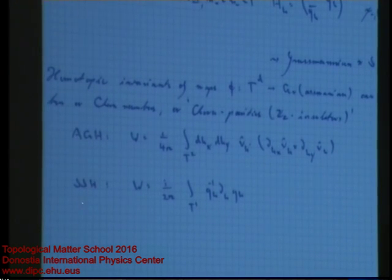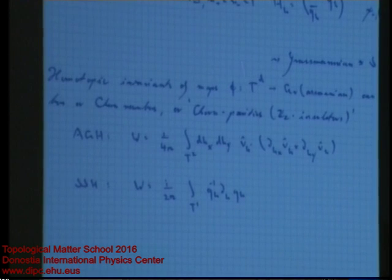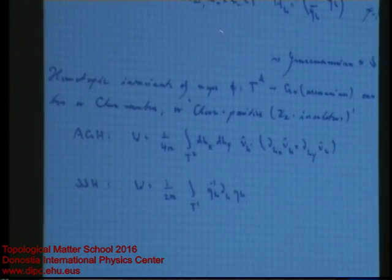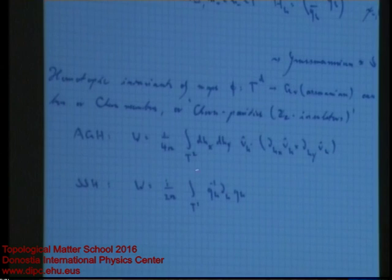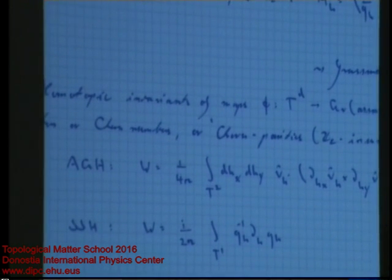In the case of the Su-Schrieffer-Heeger chain, we had a function q — a curve in the Brillouin zone in the complex plane — and the winding number is computed in this way. These are technical details, but know that there are abstract mathematicians who never calculate anything but just classify.